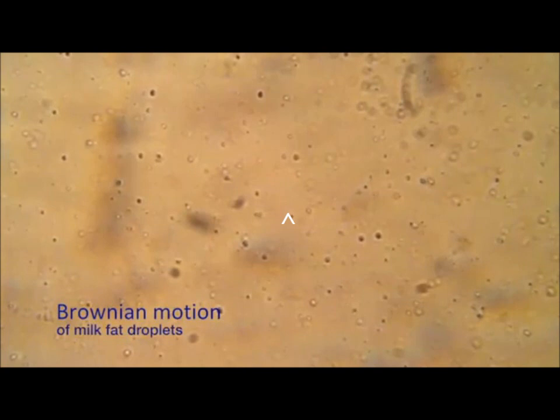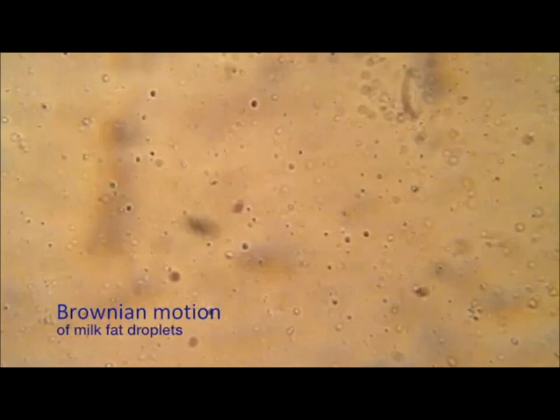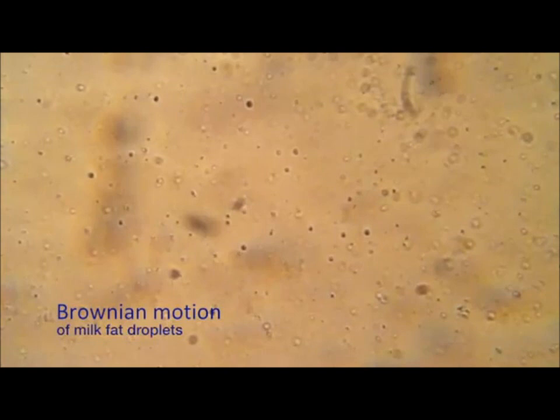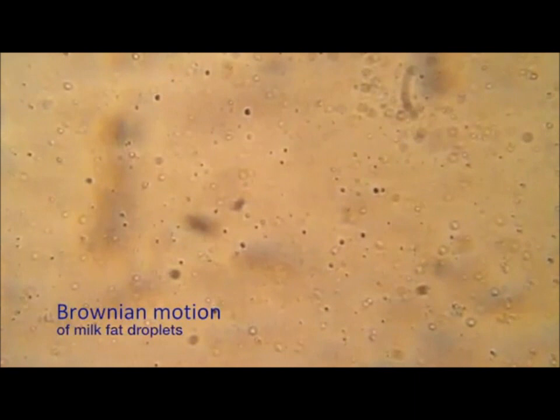This irregular, erratic motion is named Brownian motion in honor of myself. I first discovered this phenomenon in 1827 while studying grains of plant pollens suspended in liquid under a microscope. At the time, I thought the pollens might be moving because they were alive. We now know that this is not the case, and we will discuss a physical explanation now.